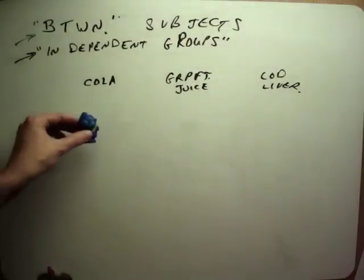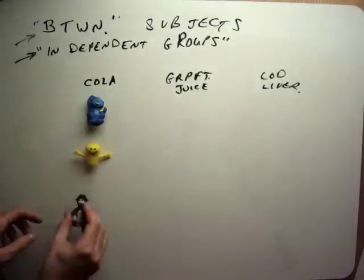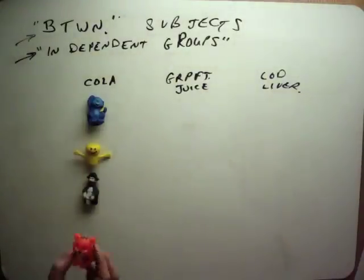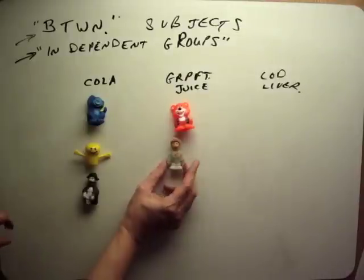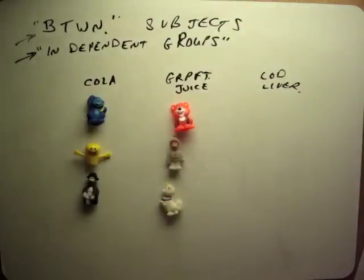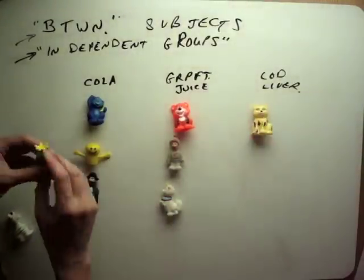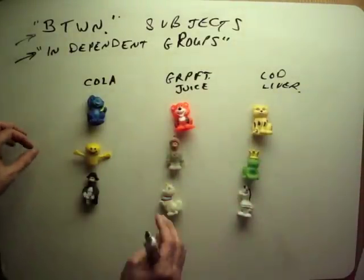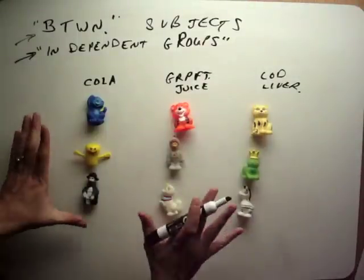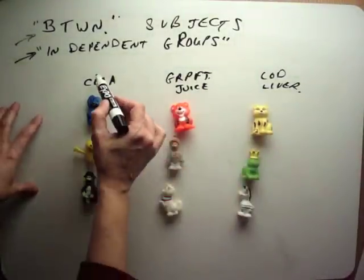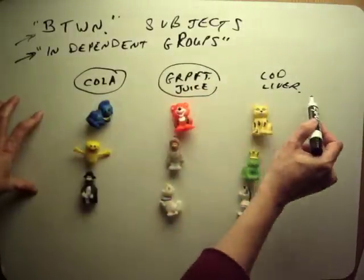So we have a monkey, an alien, and a pirate — they sipped cola and rated it. Completely different people sipped grapefruit juice: a tiger, a knight, and a unicorn. And the people who sipped cod liver oil were a cat, a frog, and a zebra. Completely different individuals — these groups don't share anything except we put them all in the same study and kept everything as similar as possible across groups except for the independent variable, which was completely different between groups.